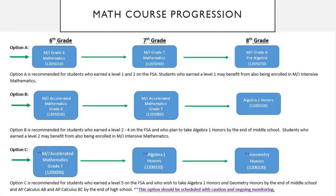Math course progression is a little more complicated because it has different options depending on how you want your student to finish middle school and enter high school. There are three main pathways students can take in math. In two of the three pathways, students will learn content at an accelerated pace that includes completion of one or more high school math courses by the end of 8th grade — either Algebra 1 or Geometry.